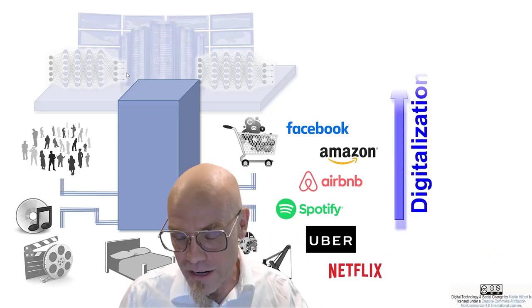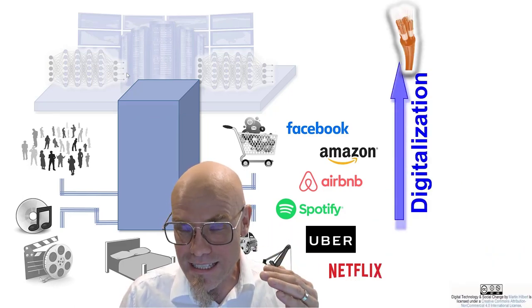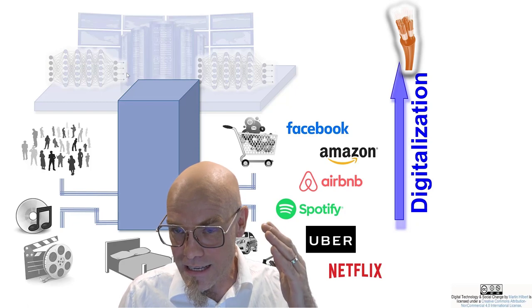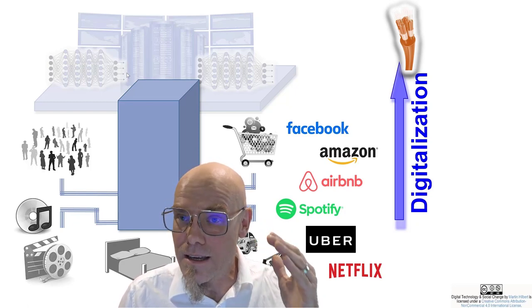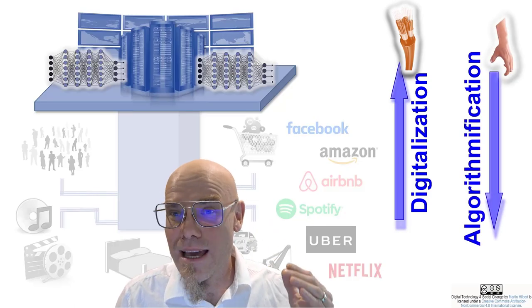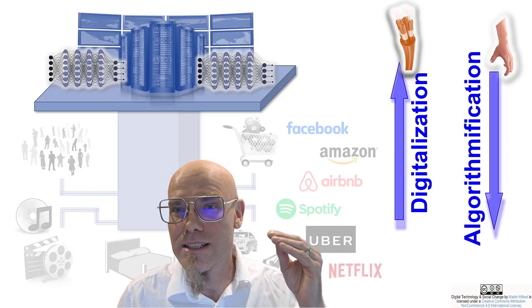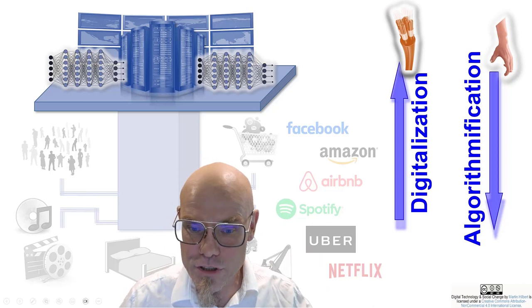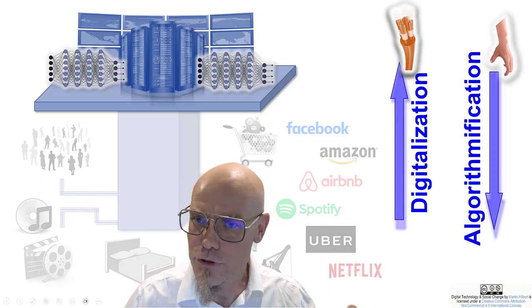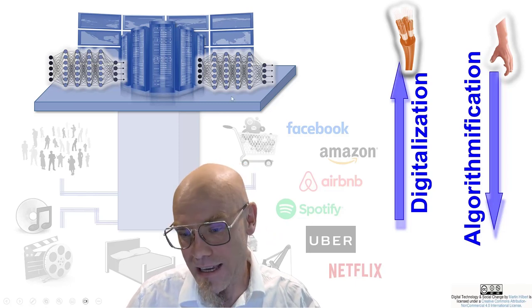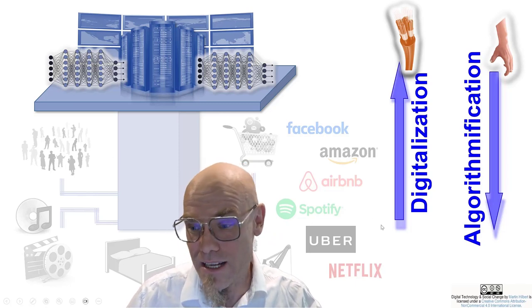And you can then, first of all, we call it digitalization. We digitalize information and data and communicate it upwards. And then we have algorithmification, which is then the knowledge that we produce up here, that we then communicate down to the physical world.